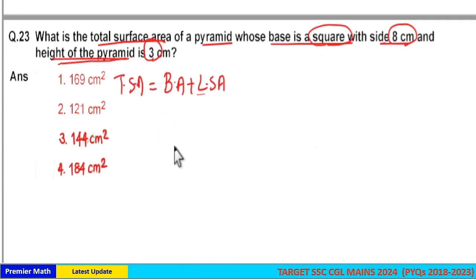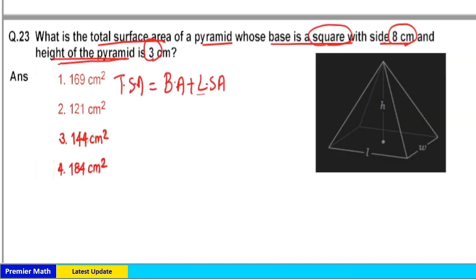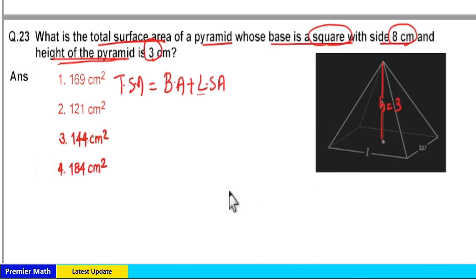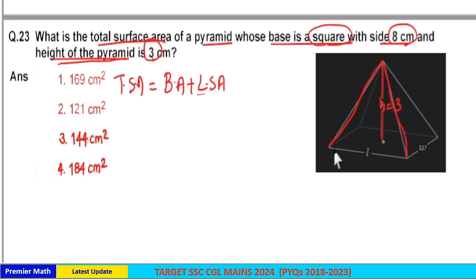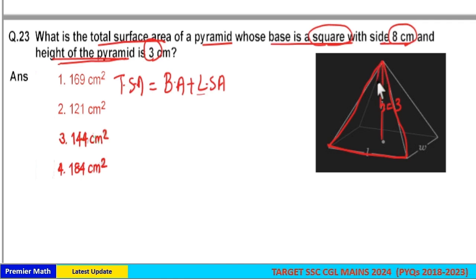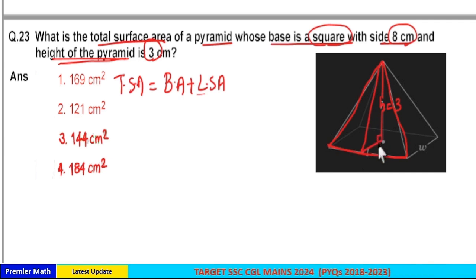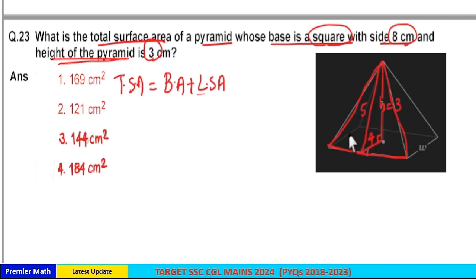Here is the pyramid. This height is the height of the pyramid, which is 3 cm. There are 4 triangles in the lateral surface, and to calculate the lateral surface area we need the height of each triangle. Take half of the base, which gives 4. This forms a right triangle, and since 3, 4, 5 are a Pythagorean triplet, the hypotenuse is 5.